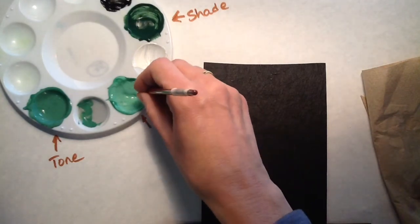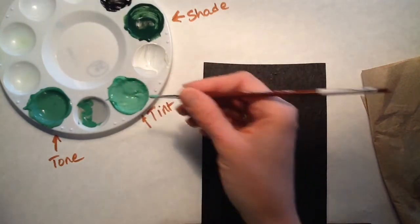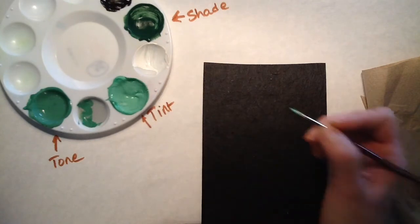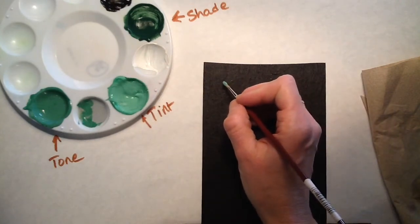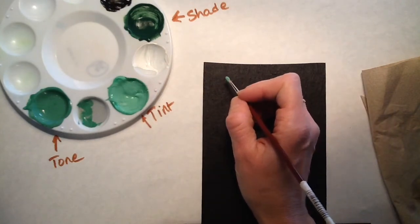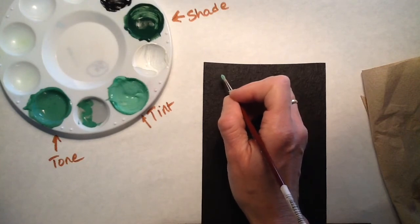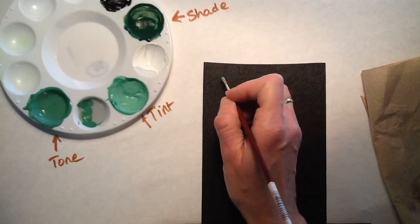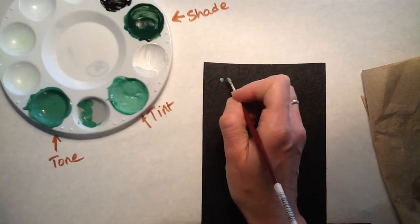I'm going to choose a color, so I'm going to use my tint, and I'm going to start at the top of my practice paper, and I'm going to learn how to press down just on the toe of the brush to create a dot.